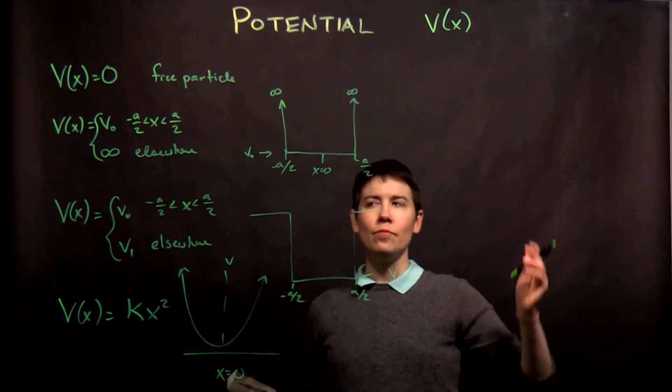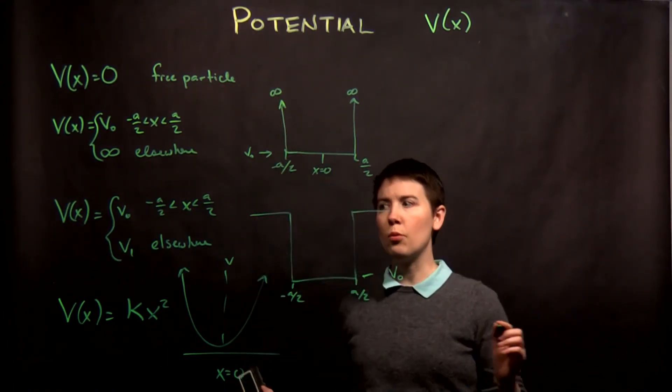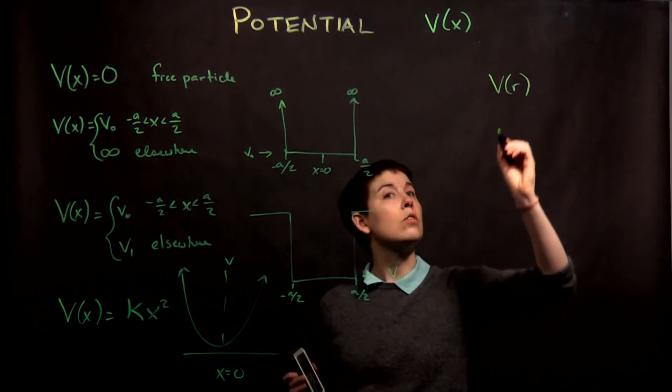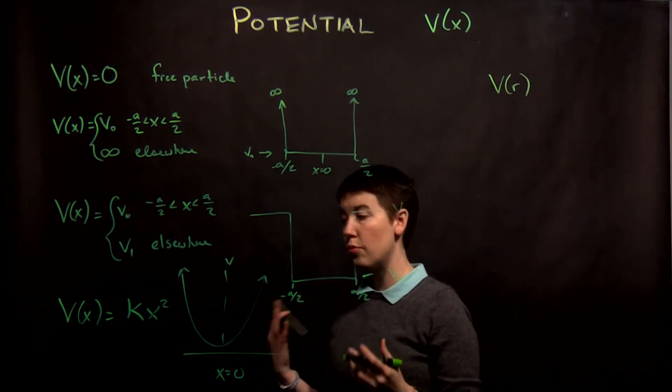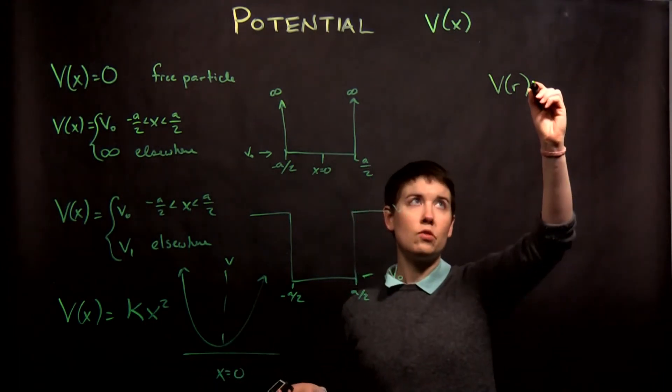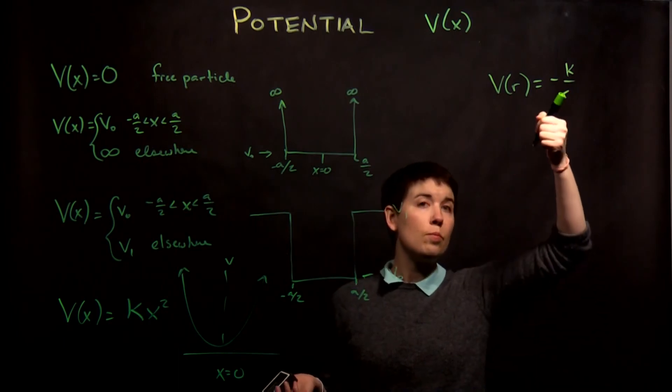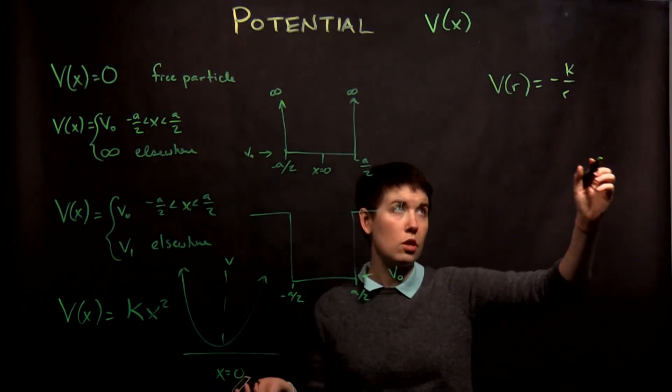Then, so here's some simple ones, 1D. We then get into, for instance, V of r. So starting to think in a radial direction. And so one example would be, for instance, negative k over r. This would be the potential from a point charge.